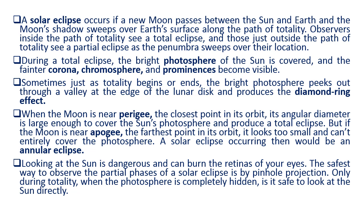Looking at the sun is dangerous and can damage your eyes. The safest way to observe the partial phases of a solar eclipse is by pinhole projection. Only during totality, when the photosphere is completely hidden, is it safe to look at the sun directly.